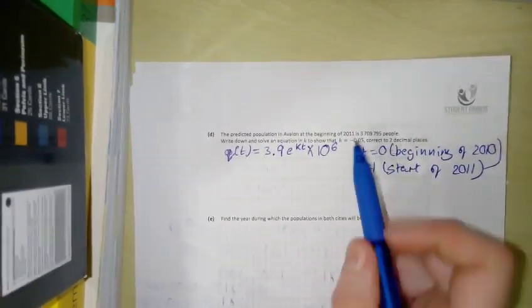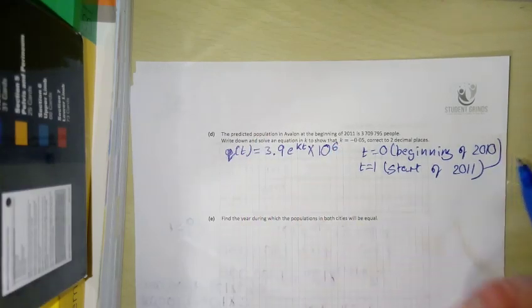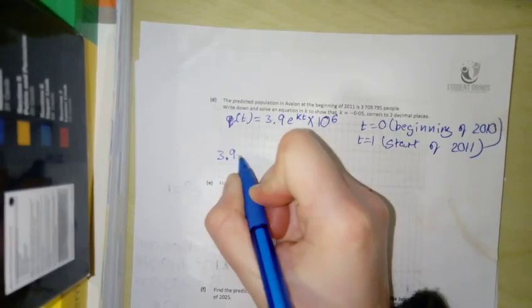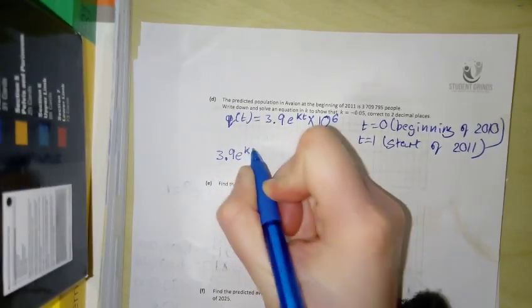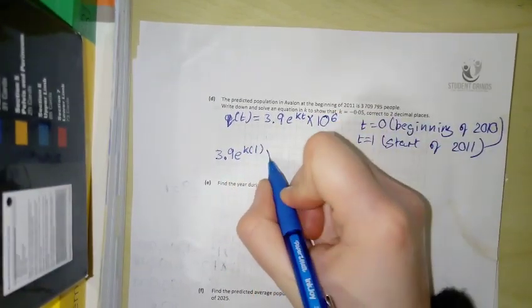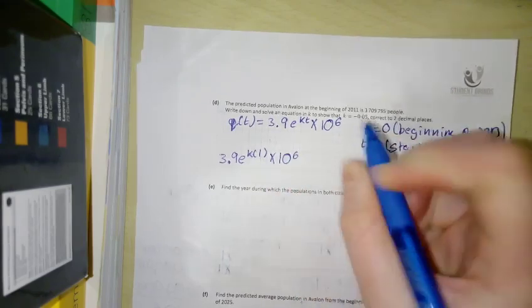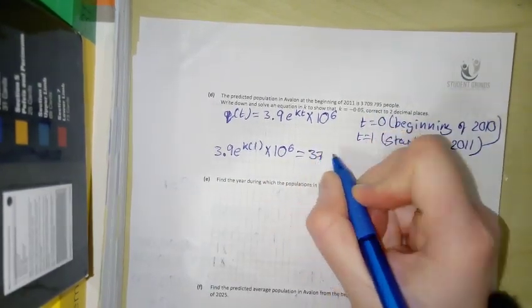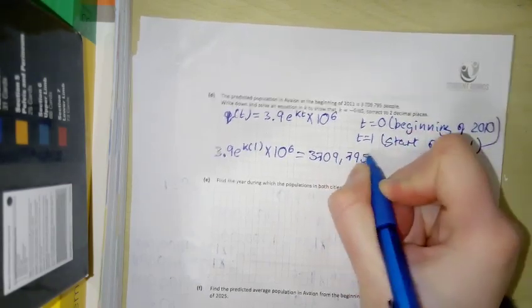So in this case, we know what it overall is equal to, and we know that T is going to be equal to 1. So it's 3.9e^K multiplied by 1 by 10 to the power of 6, and that's equal to this number here, 3.709795.